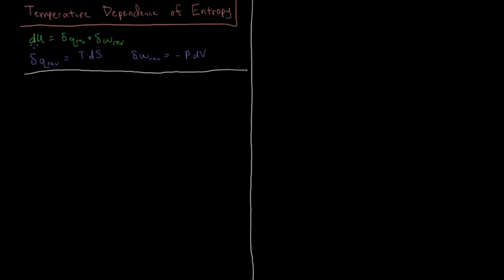The first law says that any small change in energy, dU, is going to equal the small amount of heat absorbed by the system, dq_rev — this is if it's done in a reversible way, as the rev subscript indicates — plus any small amount of work that the system either does or is done on the system, dw_rev as well.